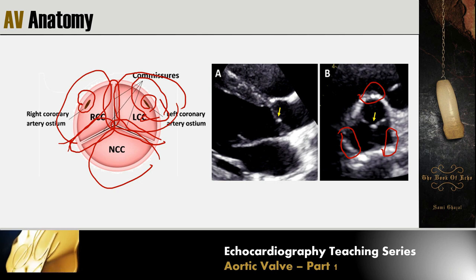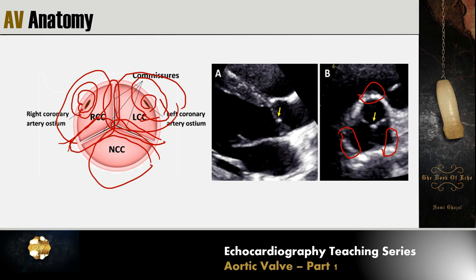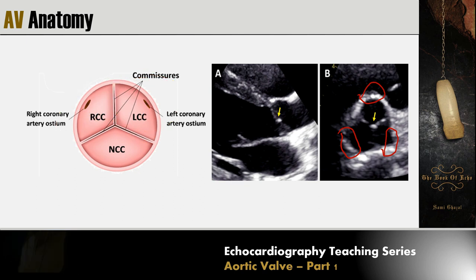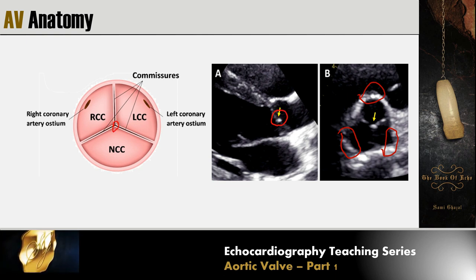Similarly, the right coronary cusp is in front of the right coronary sinus of Valsalva, and the non-coronary cusp has no coronary ostium. At the meeting point of all three cusps, sometimes we can see a thickening called the node of Arantius, which is a normal finding.